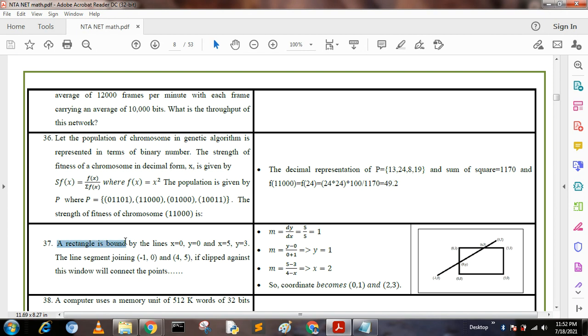Next question: A rectangle is bounded by the lines x = 0, y = 0, x = 5, and y = 3. The line segment joining (-1, 0) and (4, 5) clipped against this window will connect which points?